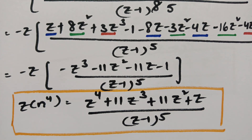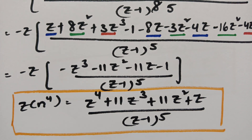If you follow these four standard functions and apply p equal to 2, 3, 4, you will get the values of Z of n square, n cube, and n to the power 4. If you practice, you can definitely solve these by yourself. Please share this video with your friends, keep practicing, and score more.